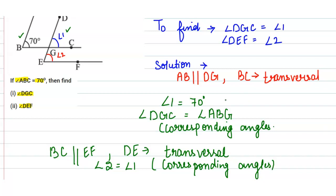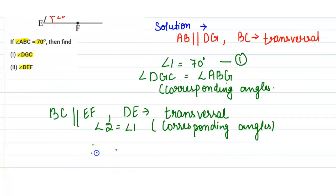So as we have already found that angle 1 is 70 degrees, that means angle 2 equals angle 1, which is equal to 70 degrees. Therefore, angle DGC is equal to 70 and angle DEF is equal to 70. I hope this is clear. Thanks for watching.